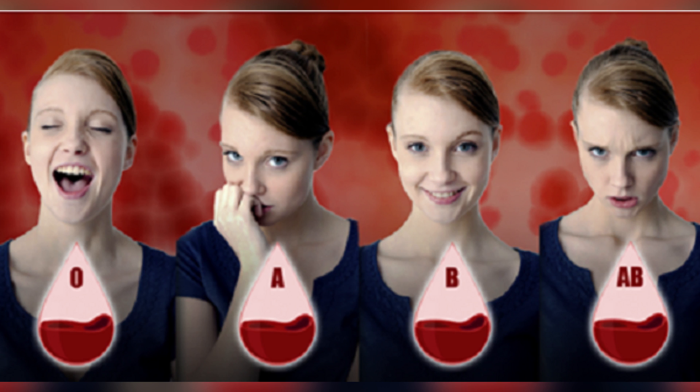Human blood is grouped into four different blood types: A, B, AB, and O. Our blood type group is determined from birth. Experts explain that each blood group has different characteristics. In today's video you can learn about various aspects conditioned by a person's blood group.